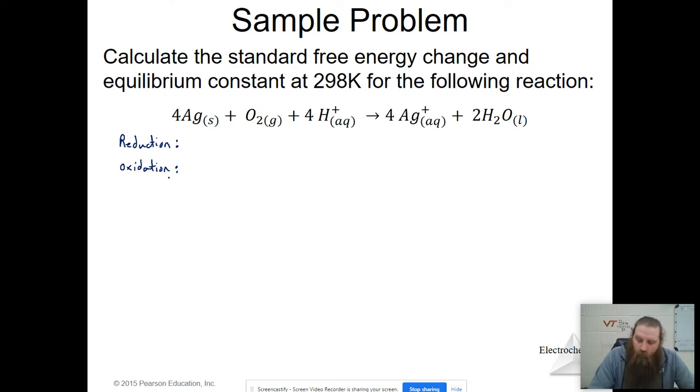Now the reduction reaction here is oxygen and hydrogen reacting. We know that because here on the right, oxygen is negative 2 and here it's 0, so it has been reduced. So in order for that to happen, we have O2 as a gas and 4H plus, which is aqueous.